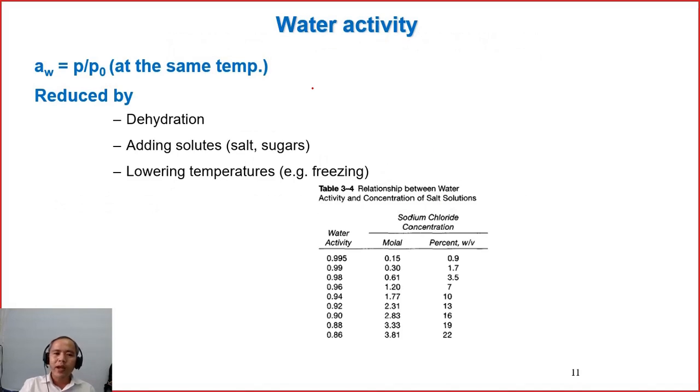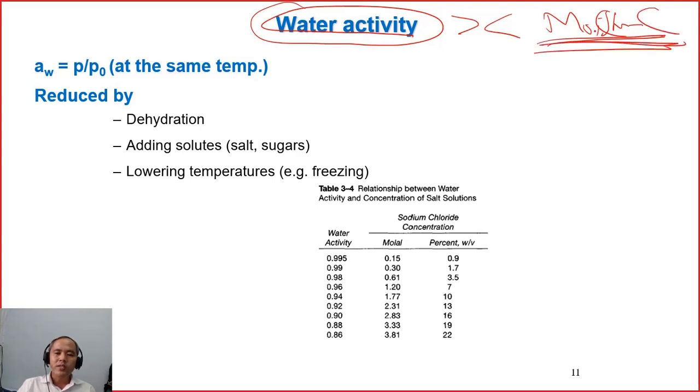The second intrinsic parameter is water activity. Water activity is not the same as moisture content. What is moisture content? Moisture content is the grams of water per 100 grams of food in percentage. It can range from zero to 100%. 100% is for pure water.